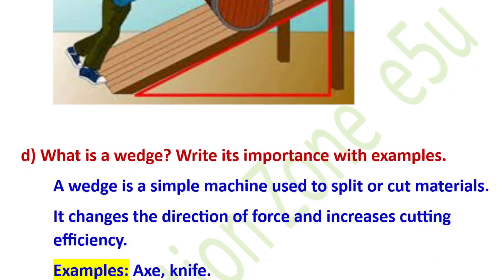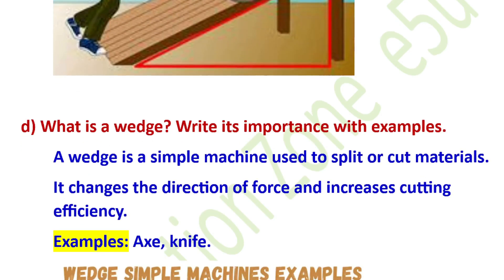What is a wedge? A wedge is a simple machine used to split or cut materials. It changes the direction of force and increases cutting efficiency. Examples of wedge include axes and knives.